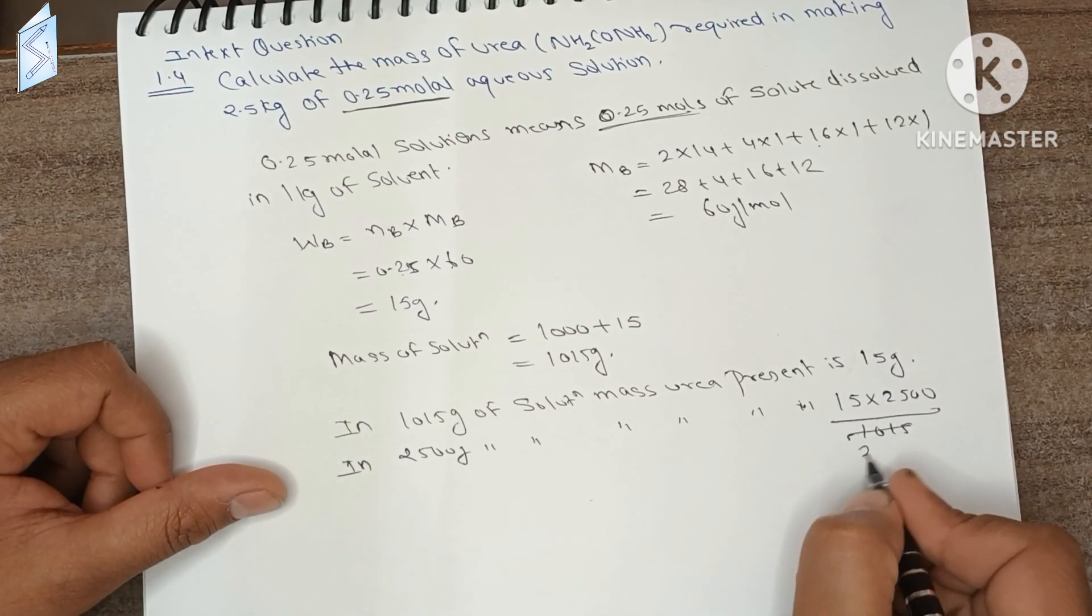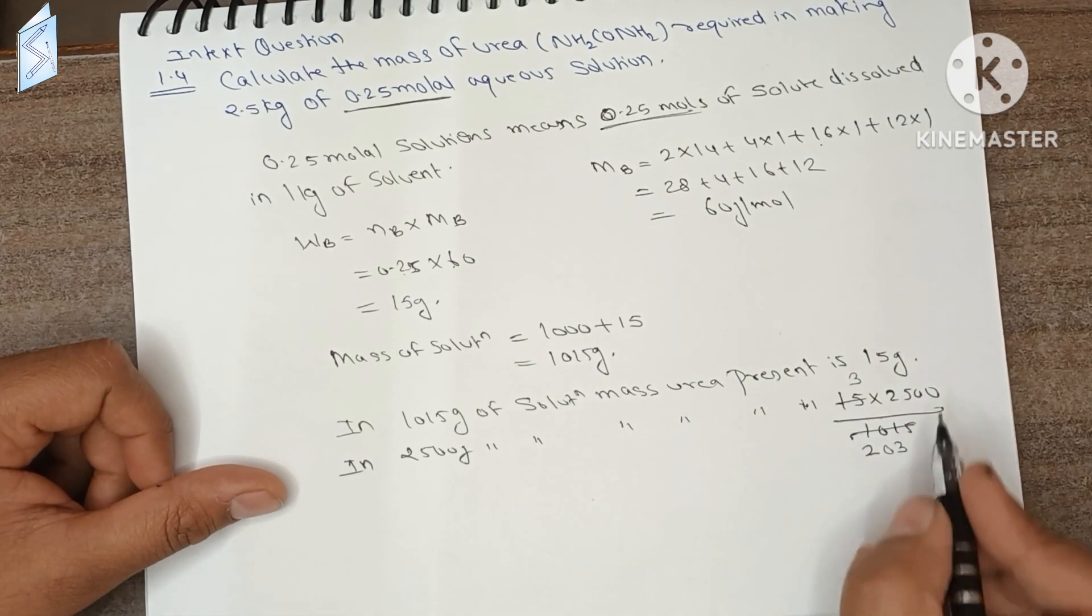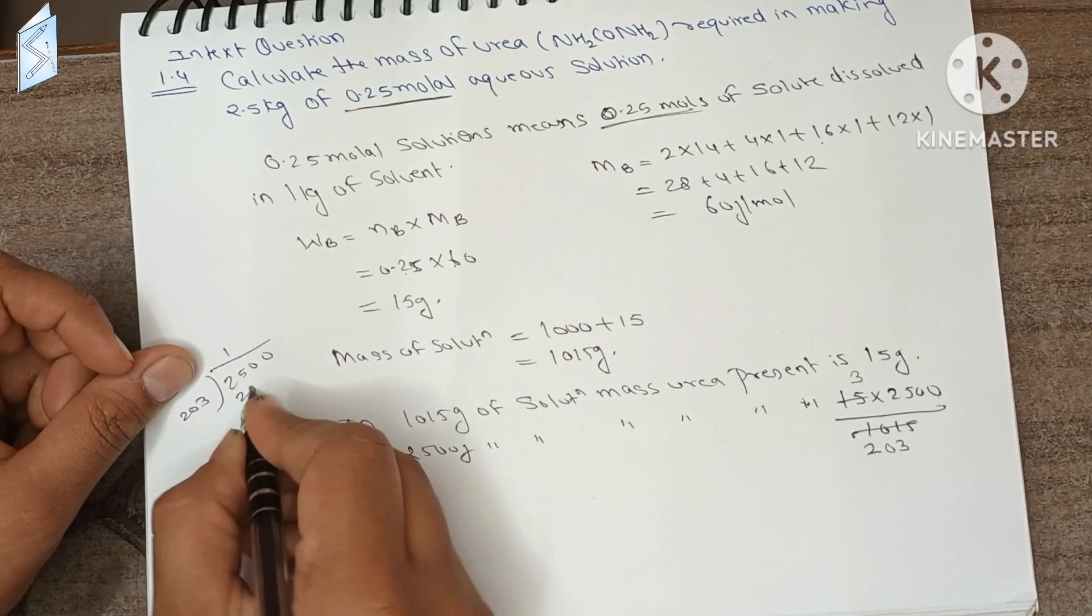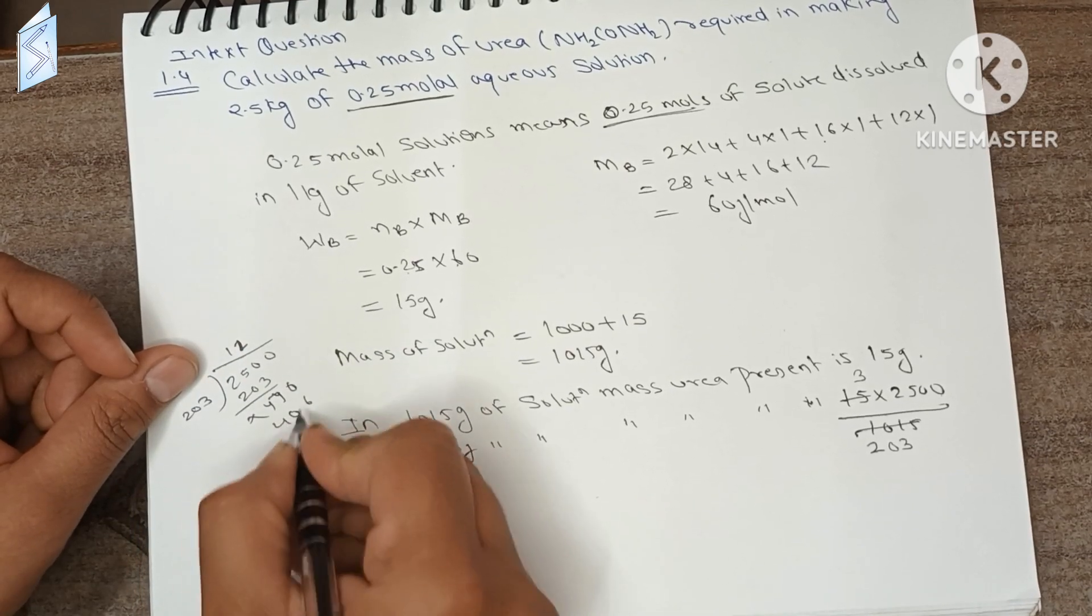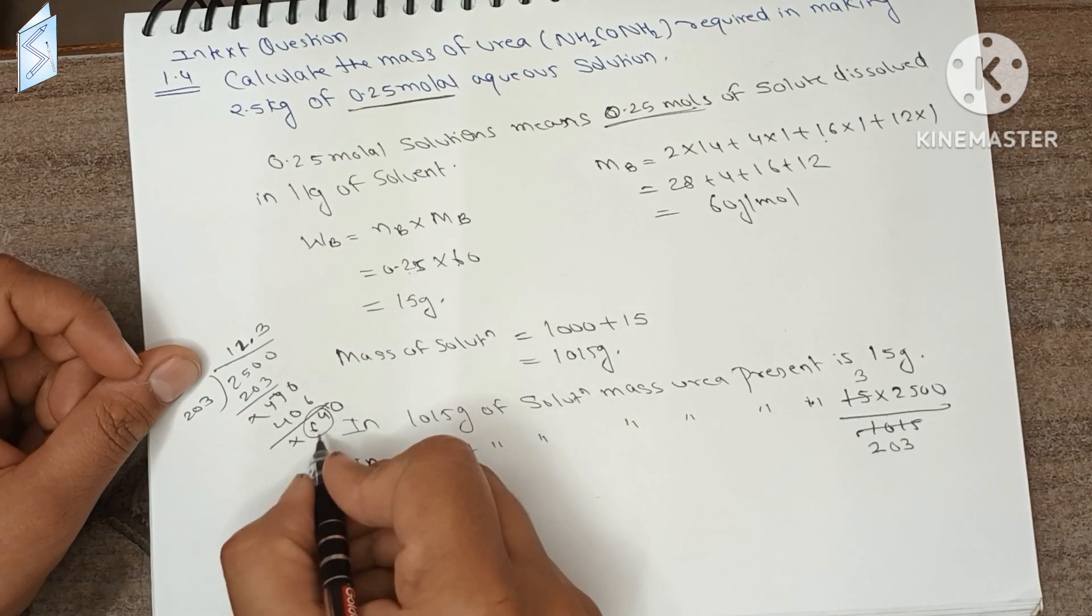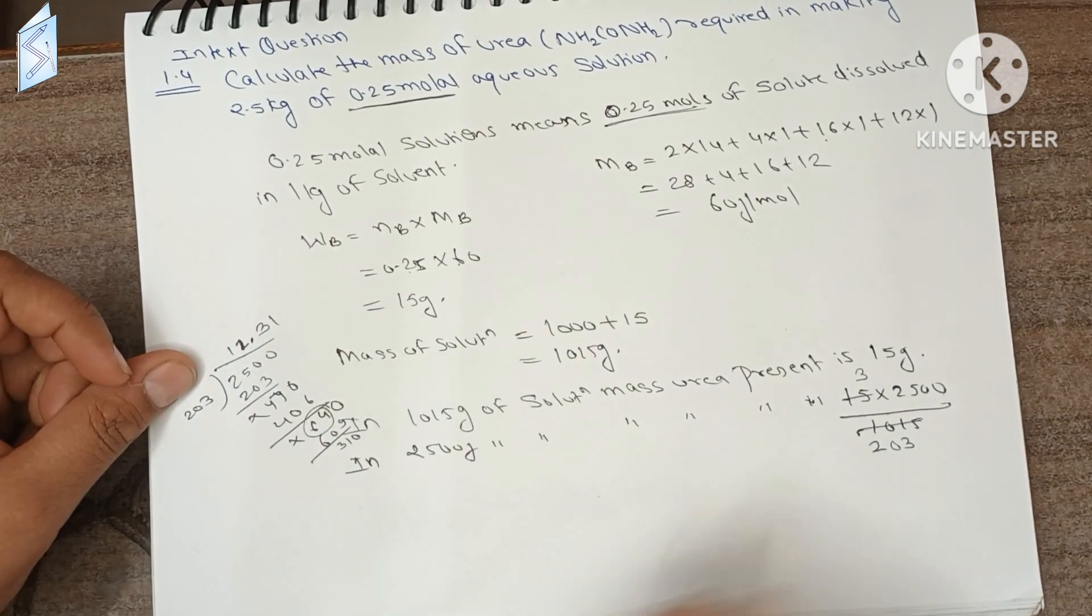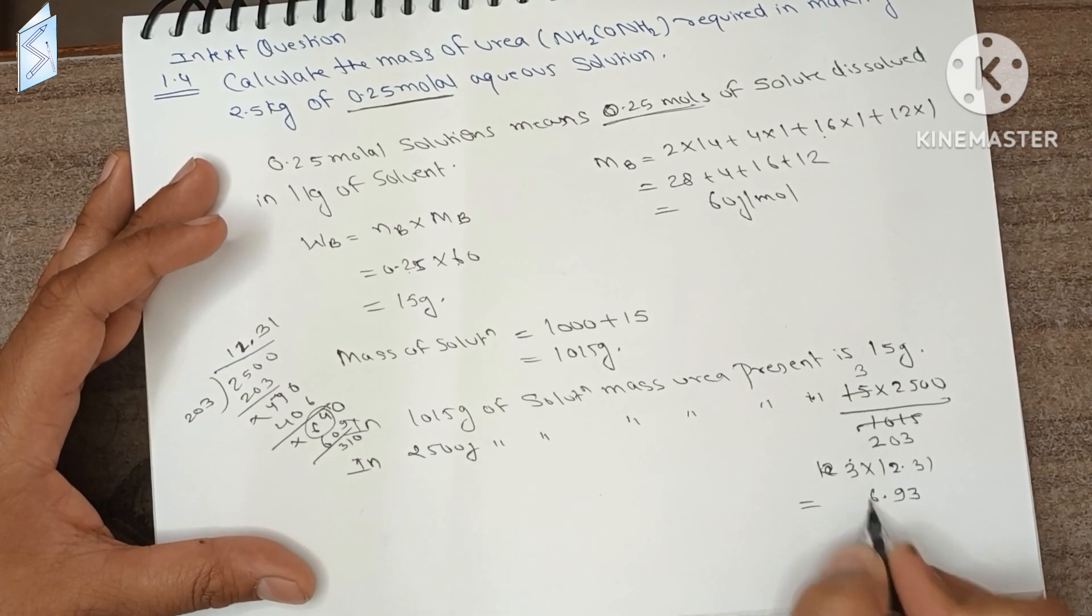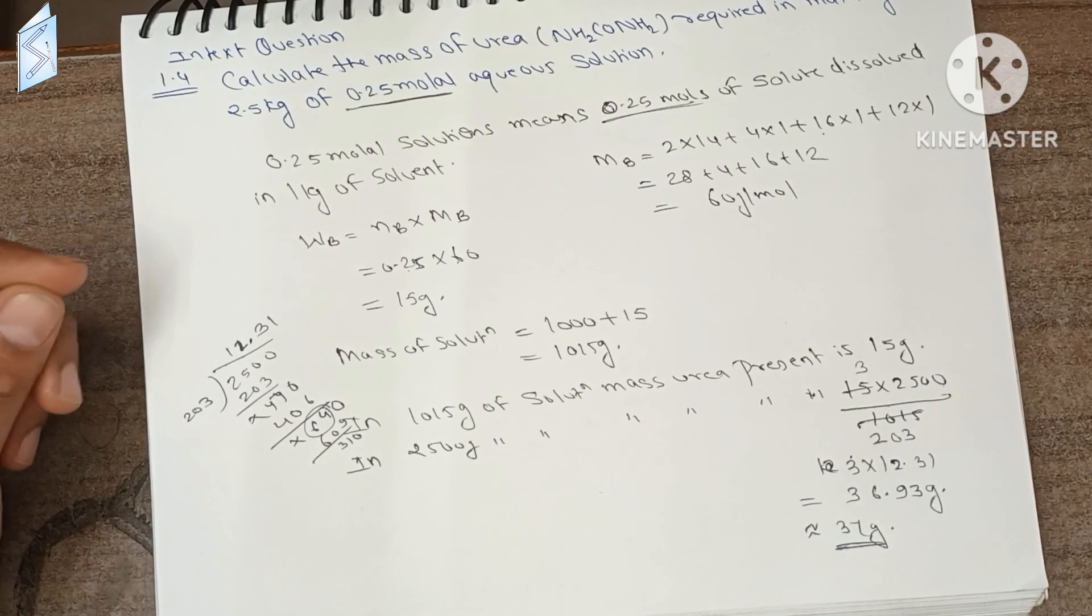Calculating: 15 times 2500 divided by 1015 equals 36.93, which is approximately equal to 37 gram. 37 gram urea dissolved in 2.5 kg solution.